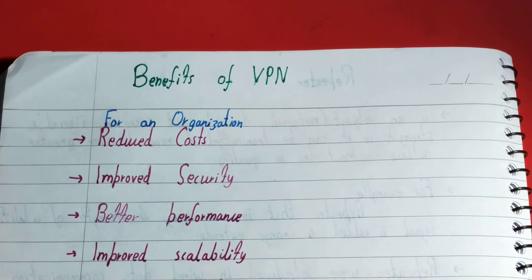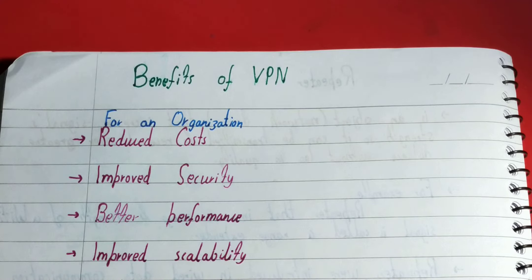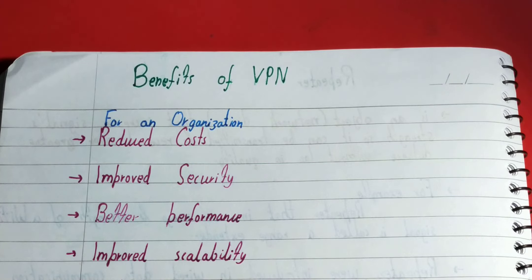The next benefit is improved scalability. Organizations often have legacy systems that are not compatible with today's network technology. If you try to install a private network for them, the legacy system will be incompatible. VPN can work with both legacy systems and today's technology, so organizations with legacy systems can still make use of VPN for accessing private networks.